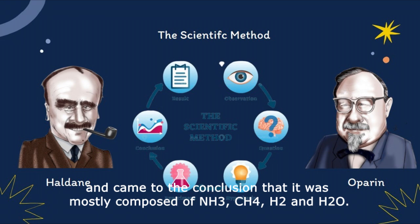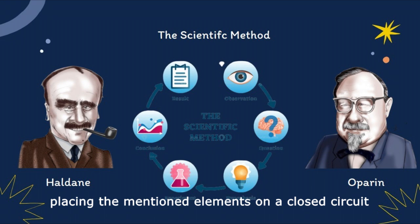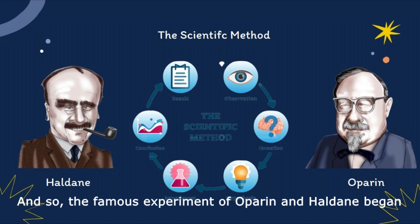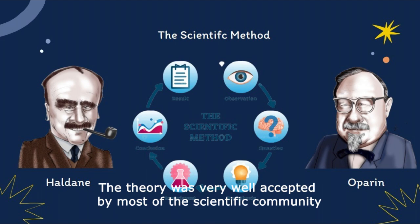And so, the famous experiment of Oparin and Haldane began, which consisted of assimilating the same conditions of the atmosphere, placing the mentioned elements on a closed circuit with electrodes to simulate electrical discharge. At the end of the experiment, there could be seen the birth of microbeings. The theory was very well accepted by most of the scientific community, and until today is the closest theory to reality.